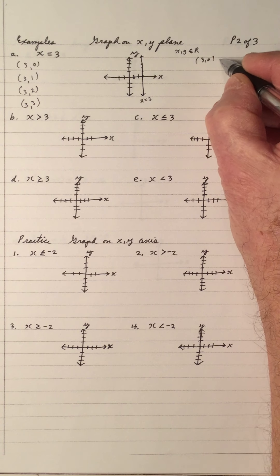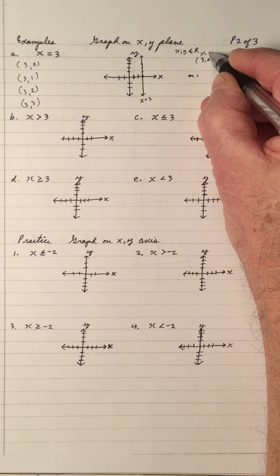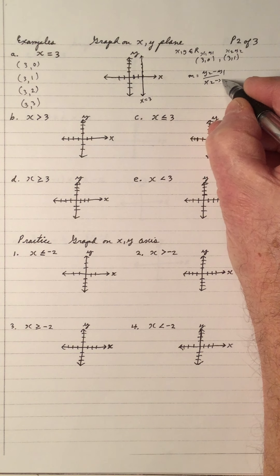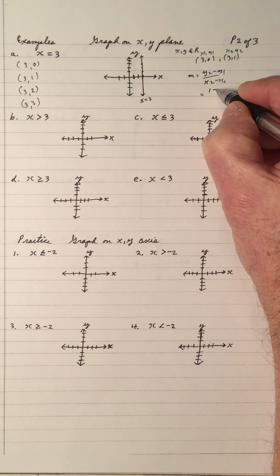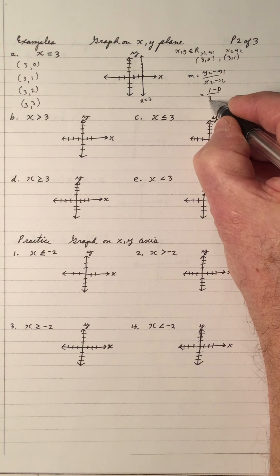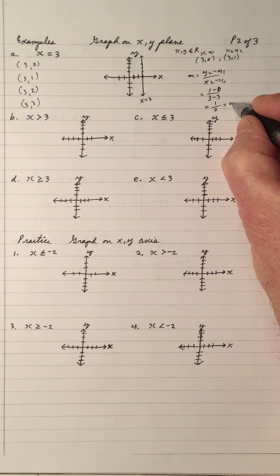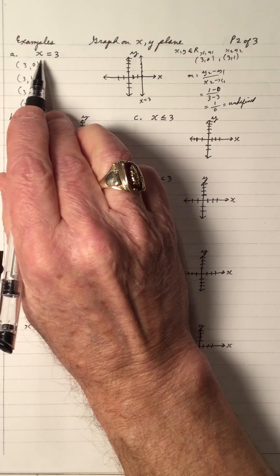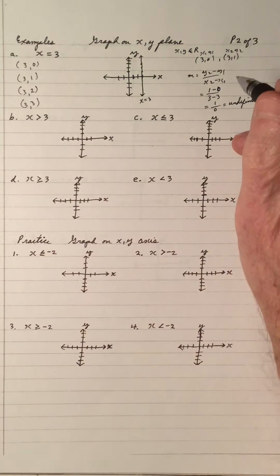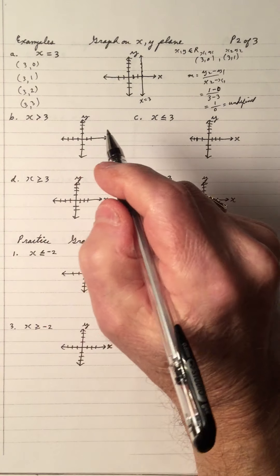Let's take two points and calculate the slope: y2 minus y1 over x2 minus x1. That's 1 minus 0 over 3 minus 3, which is 1 over 0. And 1 over 0 cannot be — it's undefined. So notice that the slope of this vertical line is undefined. A horizontal line has a slope of 0, but this vertical line has a slope which is undefined. So this line cannot go into y equals mx plus b form.